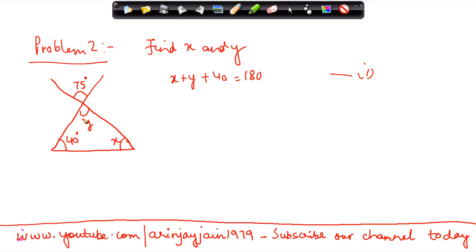Now if we look a little carefully, we will come to know that y and 75 degree, which is this and this, are vertically opposite angles. So therefore, because vertically opposite angles are equal, y should be equal to 75 degree being vertically opposite.